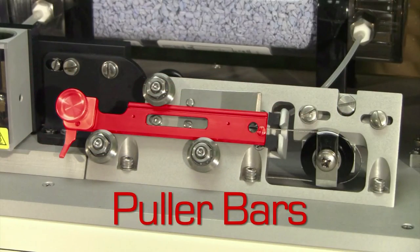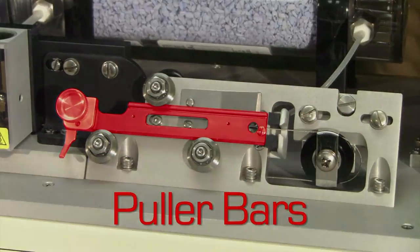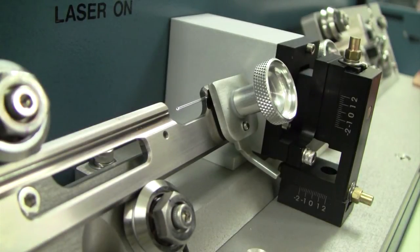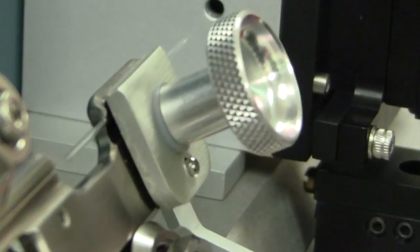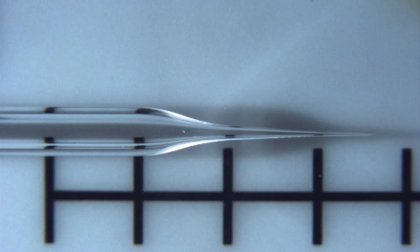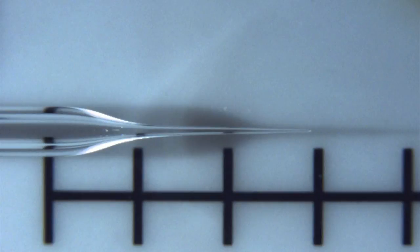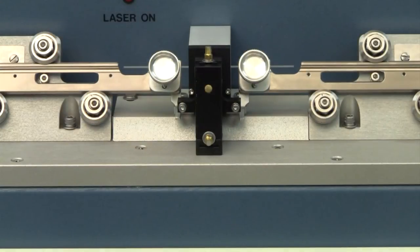The puller bars hold and position the glass capillary before the pull. More importantly, they control the movement of the capillary while the pull is executed. So it is crucial for appropriately shaped and reproducible pipettes that the puller bars are completely straight, parallel and in a well-defined position.